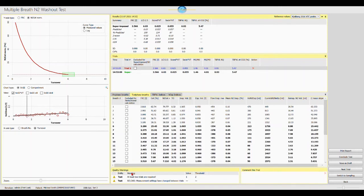The most important parameters of the washout are the functional residual capacity, FRC, and the lung clearance index, LCI, which are displayed in the summary section. After completion of the washout, you can print a report of the results.